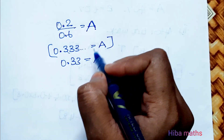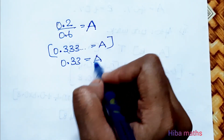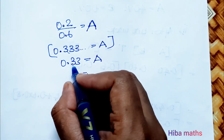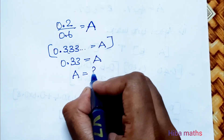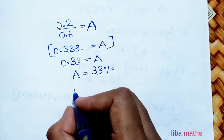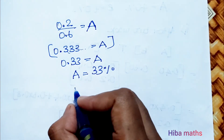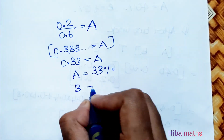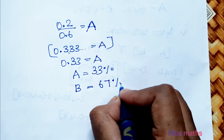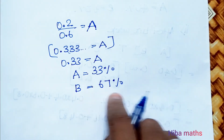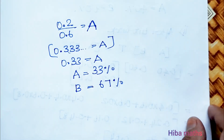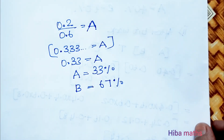So at equilibrium, A holds approximately 1/3 (33.3%) and B holds approximately 2/3 (66.7%) of the market. Thank you so much for watching.